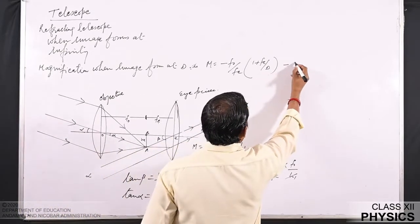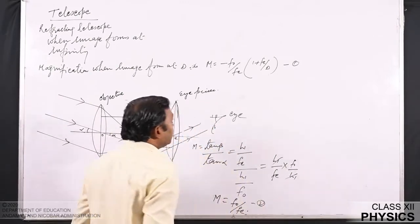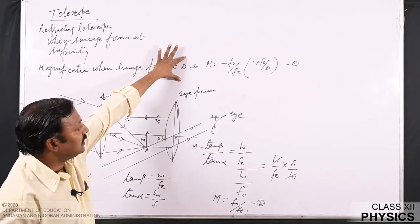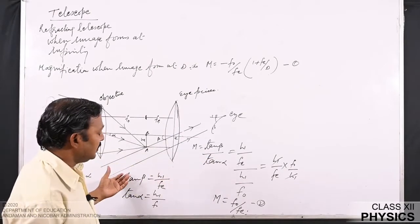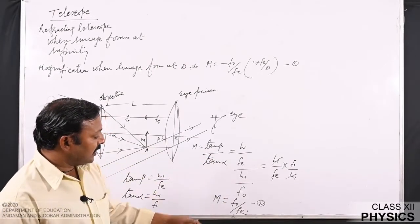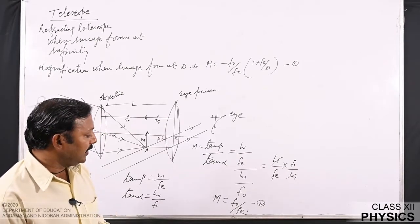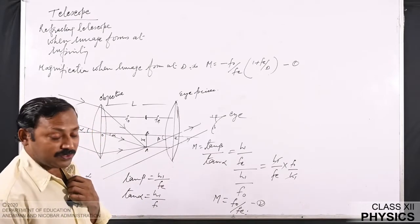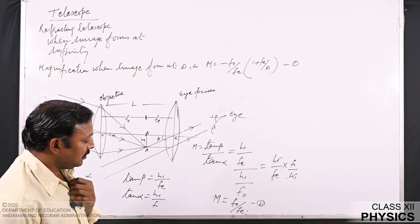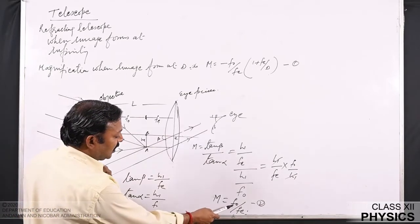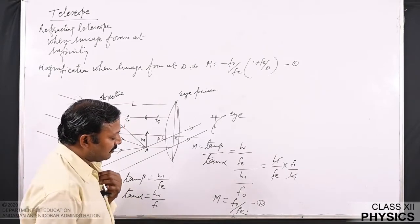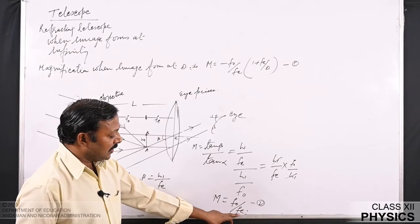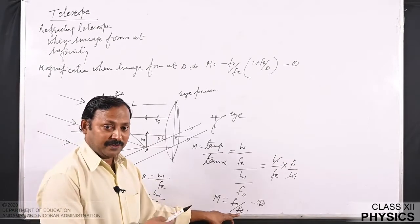Comparing magnification when the image forms at infinity versus when it forms at the distance of distinct vision, we find that when the image forms at infinity we can see it without much stress on the eye. From the formula, magnification is the ratio of the focal lengths of the objective and the eyepiece. By increasing the focal length of the objective (reducing its power) and by reducing the focal length of the eyepiece (increasing its power), magnification can be increased.